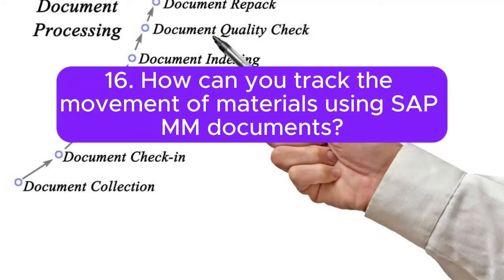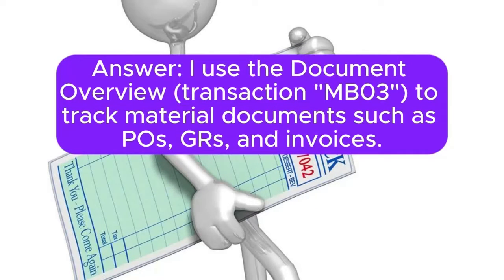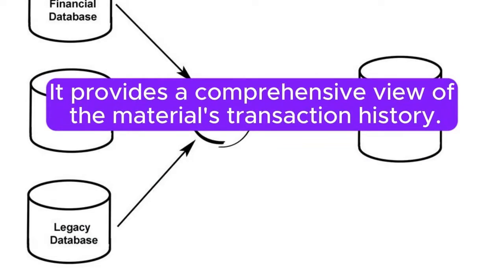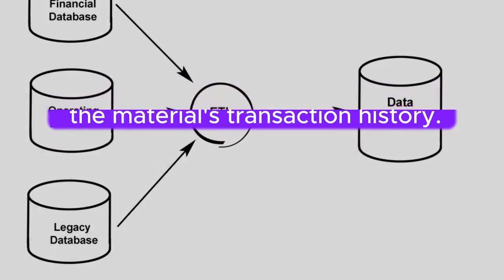Question 16: How can you track the movement of materials using SAP MM documents? Answer: I use the Document Overview transaction MB03 to track material documents such as POs, GRs, and invoices. It provides a comprehensive view of the material's transaction history.